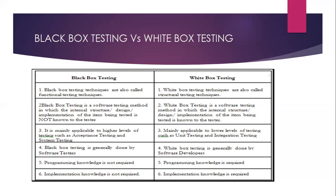In white box testing, a tester is expected to know the internal structure of the code — the architecture, the implementation, and the programming language used, whether it is .NET or Java. This knowledge helps the tester actually break the software. Black box testing is mainly applicable to acceptance testing and system testing, while white box testing is applicable to unit testing and integration testing.